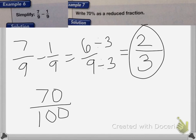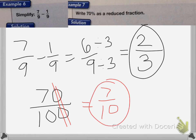Now there's a trick with zeros. If you have a zero on the top and on the bottom, you can go ahead and cross off that zero. So I end up with 7 tenths as my answer, and it cannot be reduced farther.